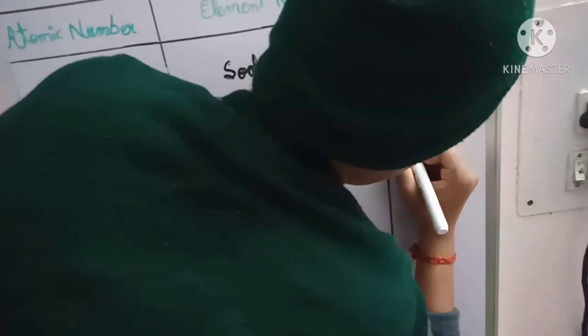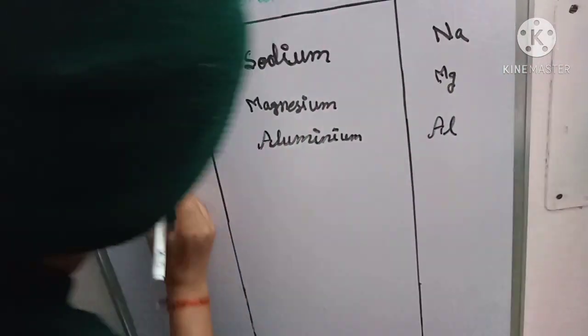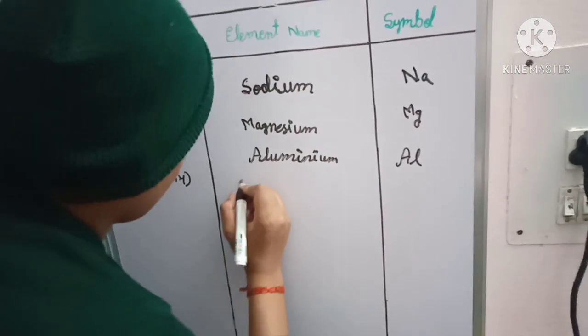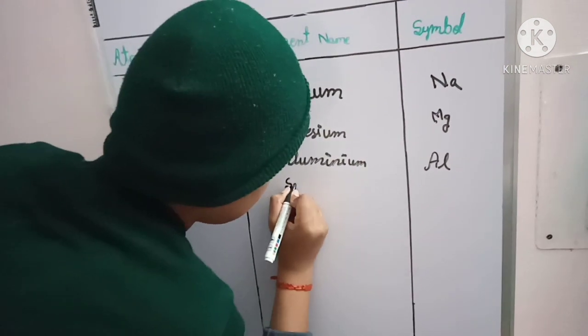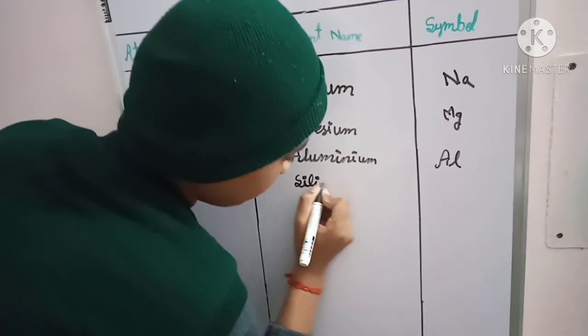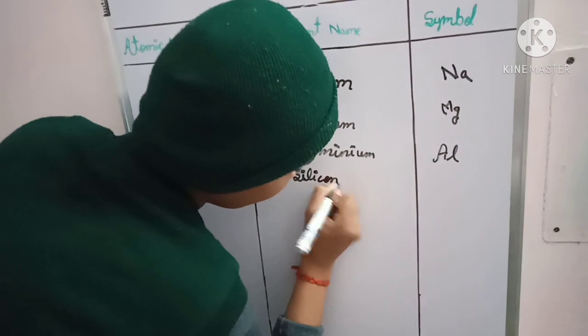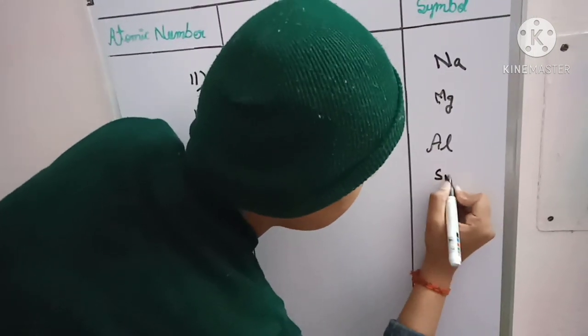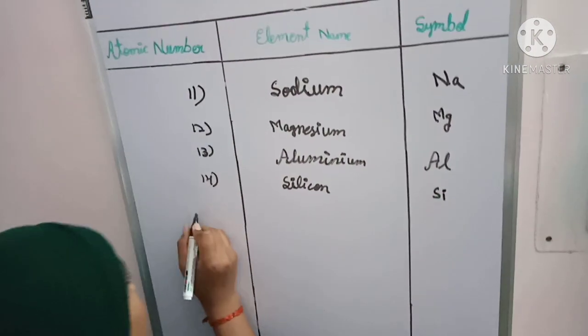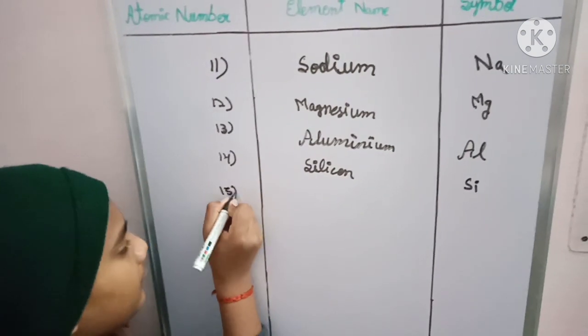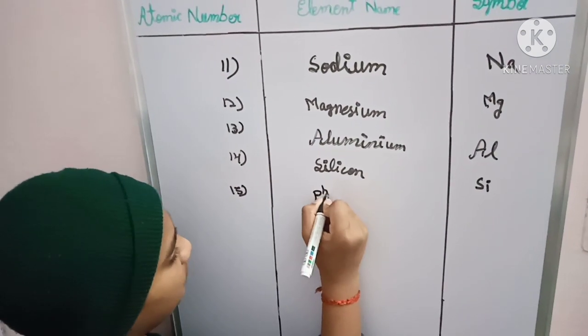14th one is silicon, symbol is Si. 15th one is phosphorus, symbol is P.